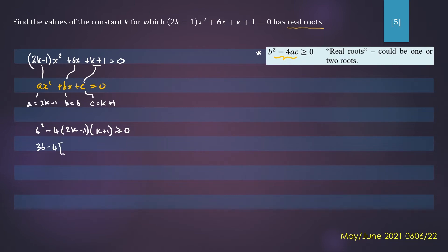So we have 36 minus 4 times this product, which would be 2k² + 2k - k - 1, greater than or equal to 0.